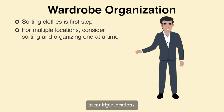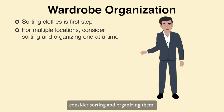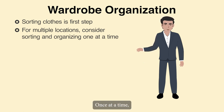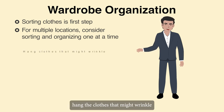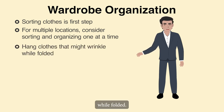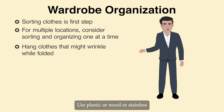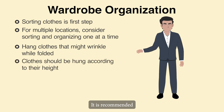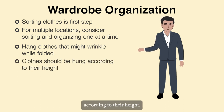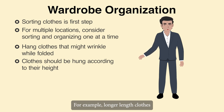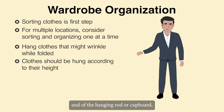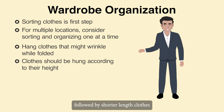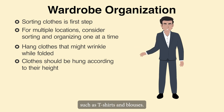If you keep your clothes in multiple locations, consider sorting and organizing them one at a time. Hang the clothes that might wrinkle while folded. Use plastic, wood, or stainless steel hangers. It is recommended that clothes be hung according to their height. For example, longer length clothes such as dresses should be hung at one end of the hanging rod or cupboard, followed by shorter length clothes such as t-shirts and blouses.